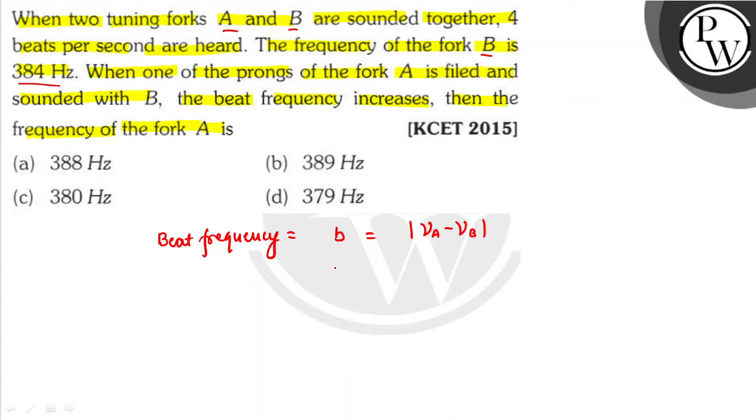Now, we see that beats per second value is 4. This is νA minus νB. νA minus νB. νA value is not known, νB value is given. What is this? 384. So 4 equals |νA - 384|.